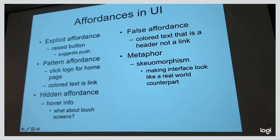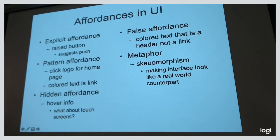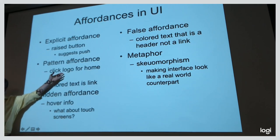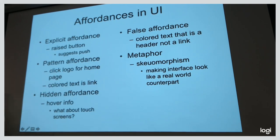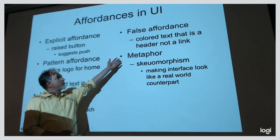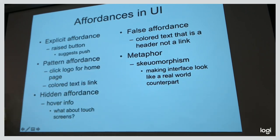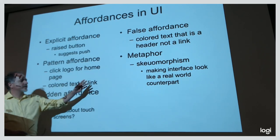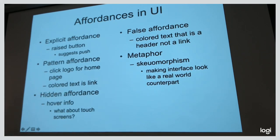In graphic interfaces, there are ways to do this right. Most button widgets have a raised look to indicate something can be depressed. There are familiar conventions — like clicking the logo on a homepage takes you back to the starting point. It's frustrating when that doesn't work and the logo is just a logo. There's also the problem of false affordances — colored headers that look like links but aren't. Skeuomorphism — making interfaces look like real-world objects — fell out of favor. Apple was really big on this with bookshelf apps, then went the opposite direction toward stark minimalism.